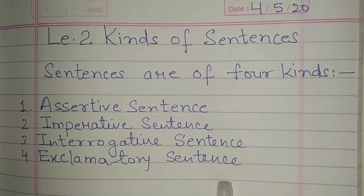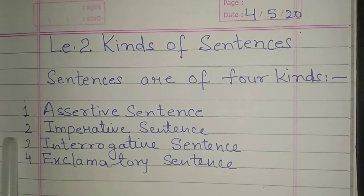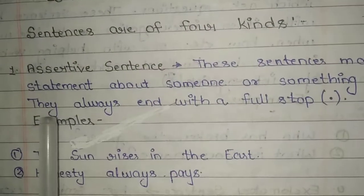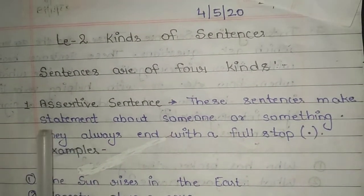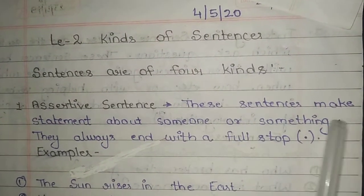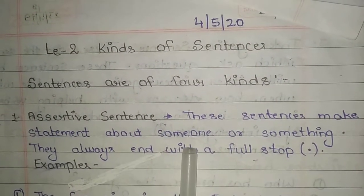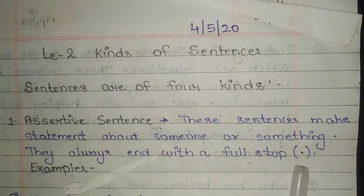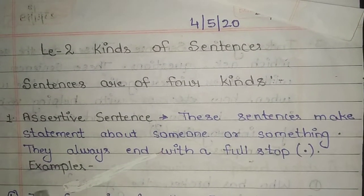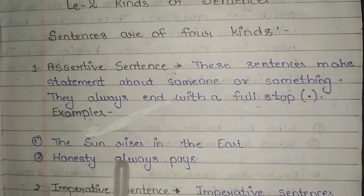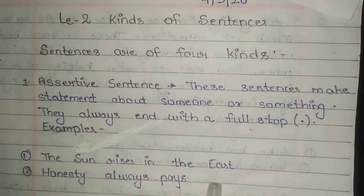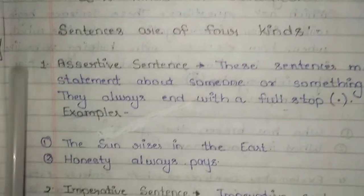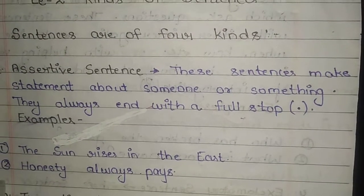After writing you have to write the definition of the first 2 kinds. Assertive sentence: these sentences make a statement about someone or something. They always end with a full stop — see the full stop. After writing the definition, write two examples: 'The sun rises in the east.' Second example: 'Honesty always pays.' First write the definition, after that write these two examples.